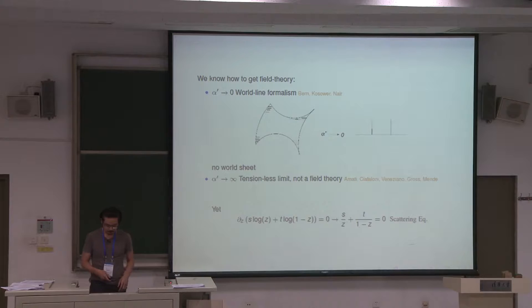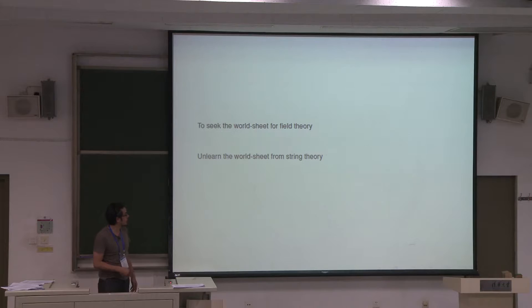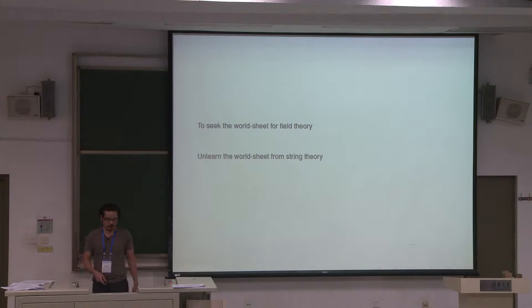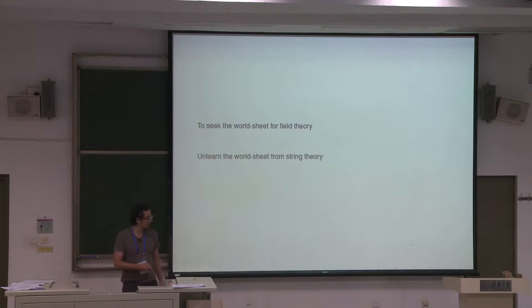So this is what we know. We would like to start from this and try to find what kind of world sheet theory actually gives the particle theory. The way we're going to do this is to first study string theory but forget about the world sheet — think about string theory not as a world sheet theory, but just from the properties of the scattering amplitudes. Then from this, take hints on how to find a scattering amplitude for field theory that allows a world sheet.